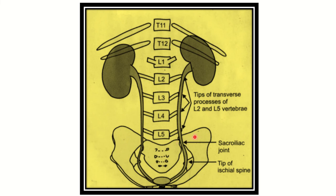Here is the normal relation of the ureter to the vertebral column. On the right side is the right kidney and on the left is the left kidney. The right kidney relates to the 12th rib, while the left kidney relates to the 11th and 12th ribs. The ureter arises from the renal pelvis and starts at the level of the lumbar vertebra 2, then descends along the tips of the transverse processes of L2, L3, L4, and L5.